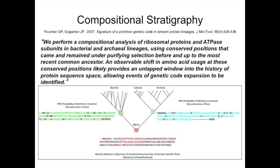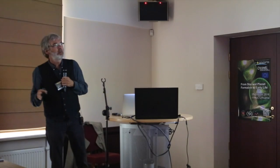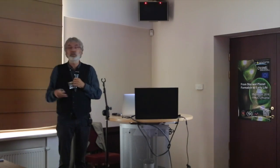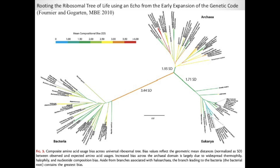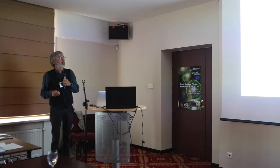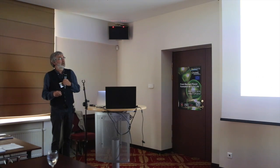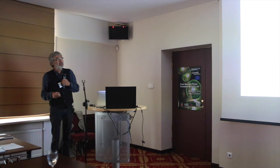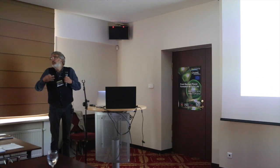We then turned this around and, agnostic about where LUCA sits in the tree, looked at all branches to see how different their amino acid composition is from the average in present-day organisms. The branch with the largest deviation from present-day amino acid composition is the branch connecting bacteria to the other organisms. Other deviations appear in organisms that are either extreme halophiles living at very high salt concentrations or organisms that live at high temperatures.